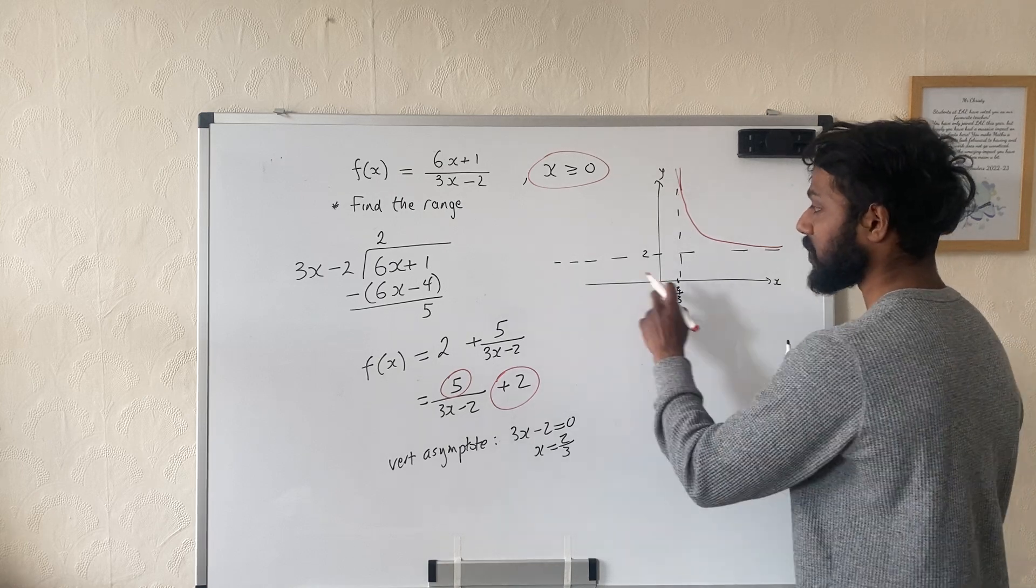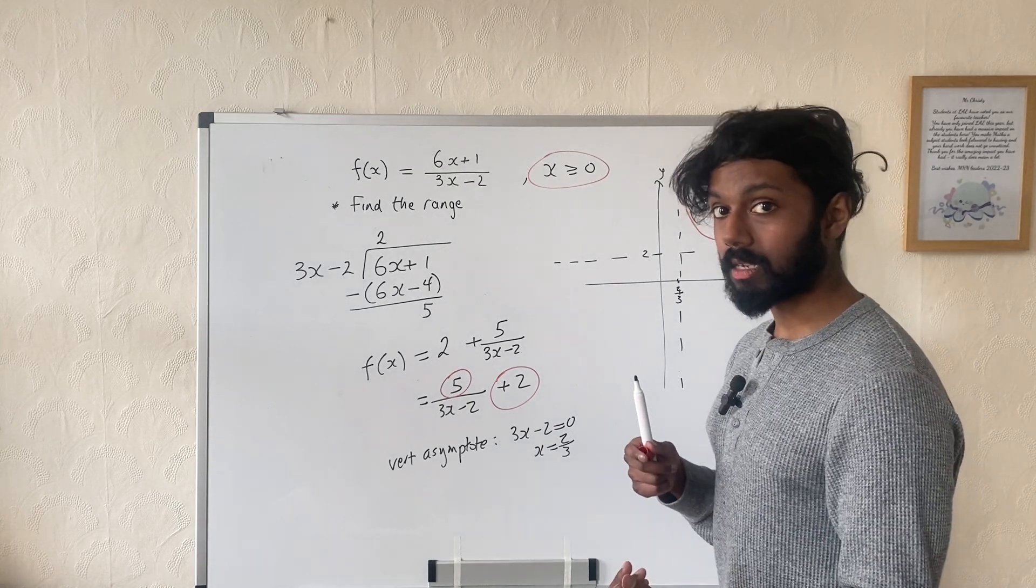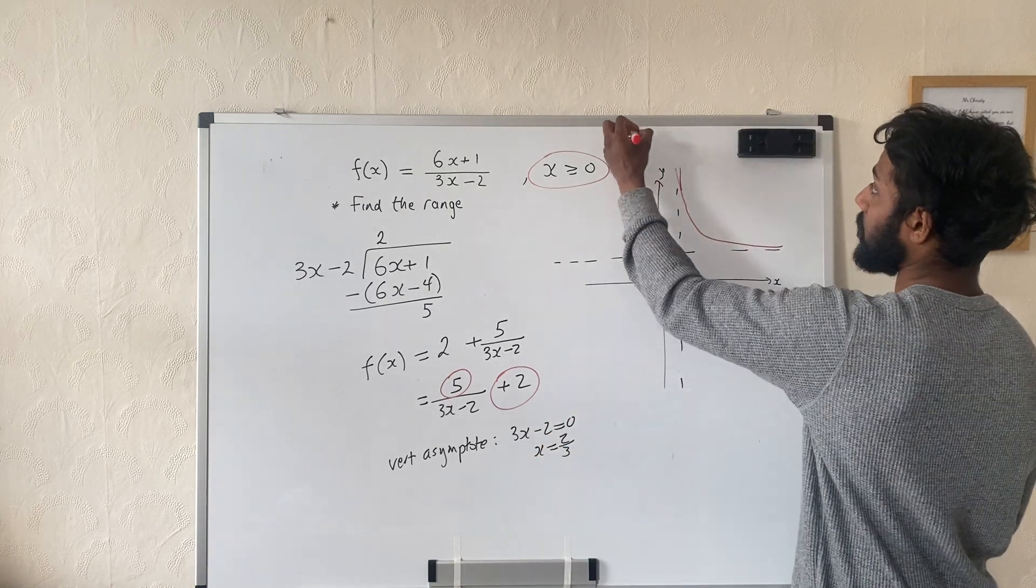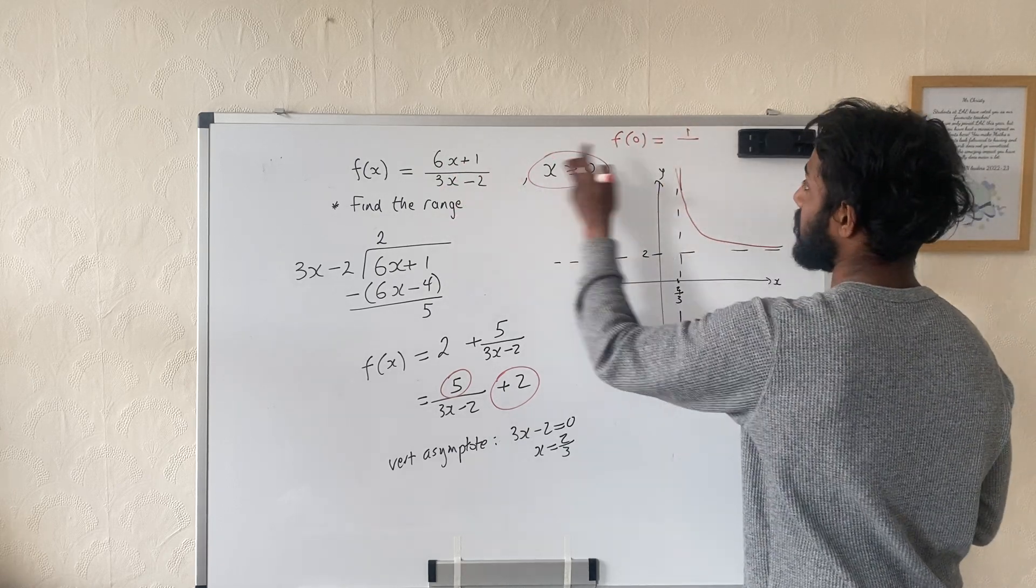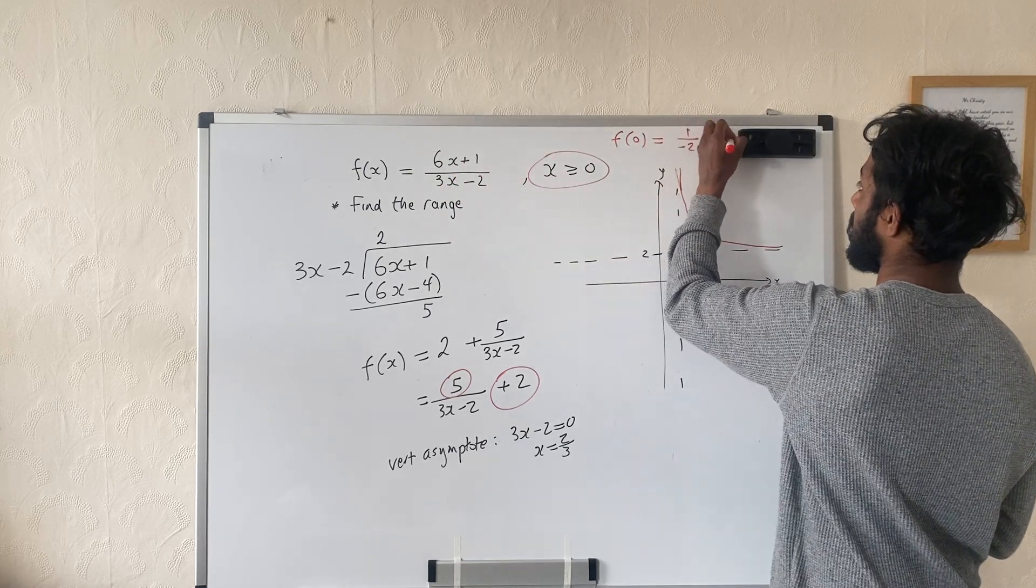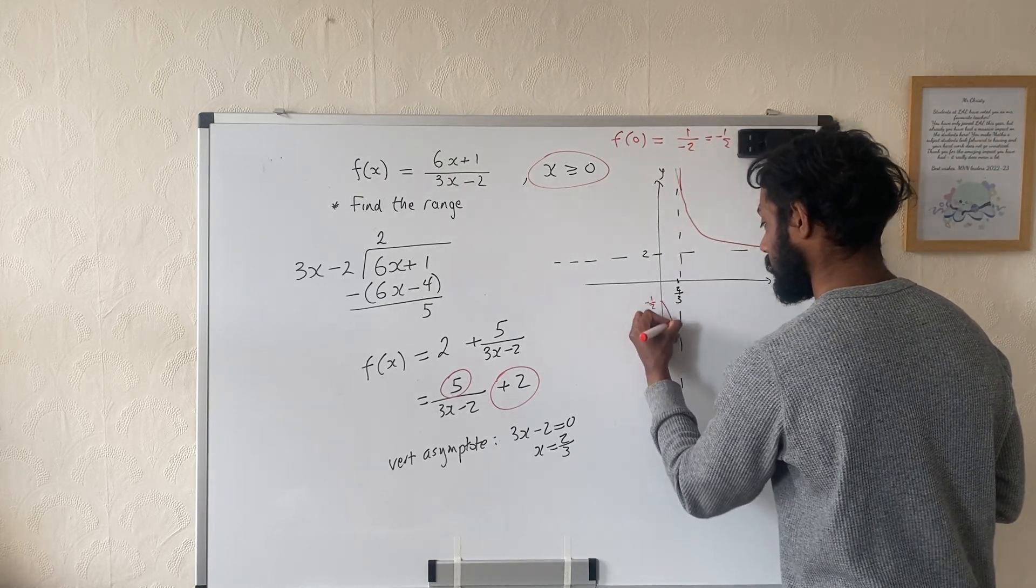Now what number does it intercept the y-axis with? Well, to work that out, I'm just going to plug in 0 because the y-intercept occurs when x is 0. So let's just do that over here. What is f(0)? Well, f(0) would be 1 over 0 minus 2, minus 2, which is minus a half. So it's going to intercept here, minus a half, and it's going to look like this.